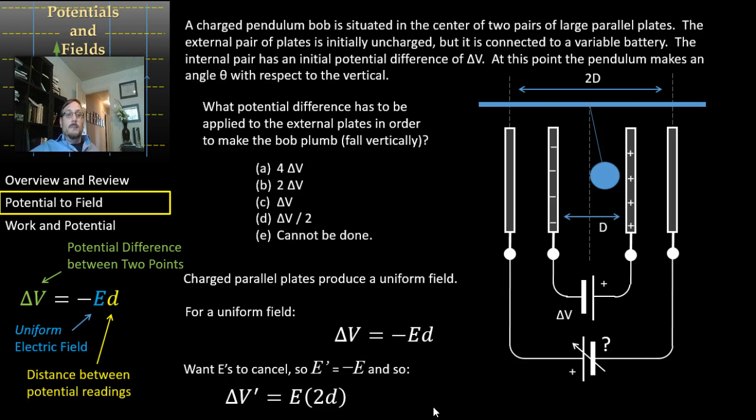We can split up that minus sign so that we have this minus Ed here, which is the original voltage. That means we have minus 2 ΔV. The minus is accounted for by reversing the battery, so we have 2ΔV - that's the correct answer in this case. Use that to help you figure out what you're thinking about when you're thinking about these problems.